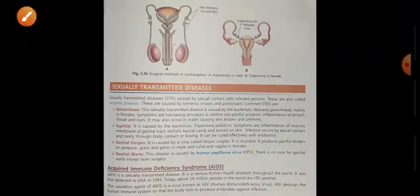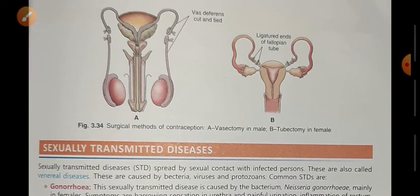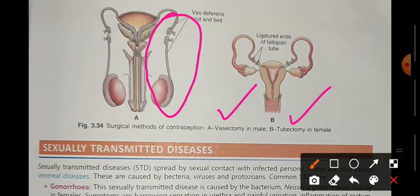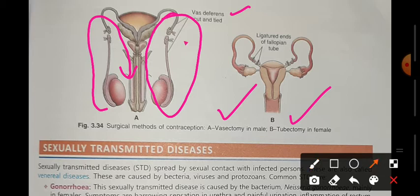The surgical method is the best and permanent method. It is the most safe because there is no hormonal imbalance. For males, this is called vasectomy. The vas deferens, through which sperm carry out through the penis and outside the body, is cut and tied at particular points. So sperm will not be able to get a passage. This will not have any effect on the male's sexual health.